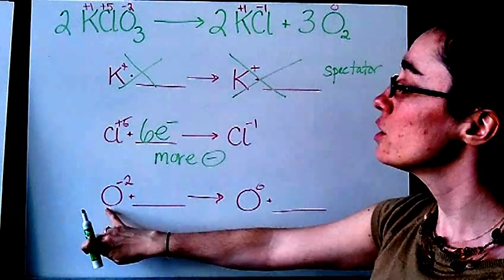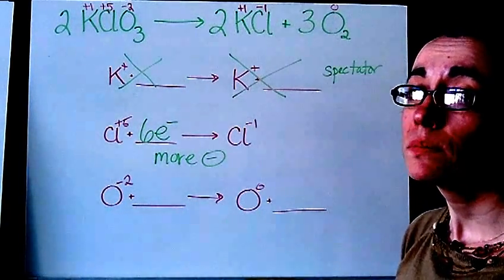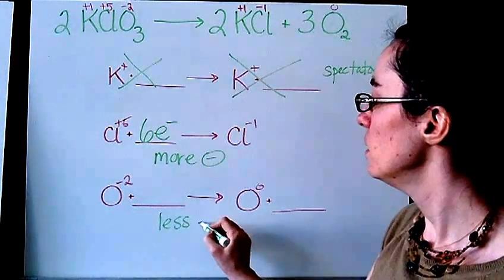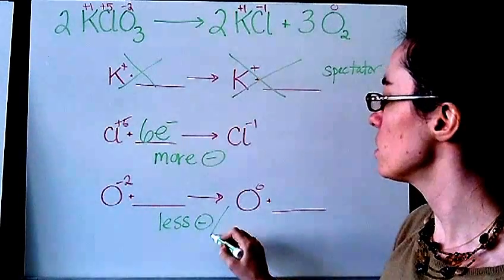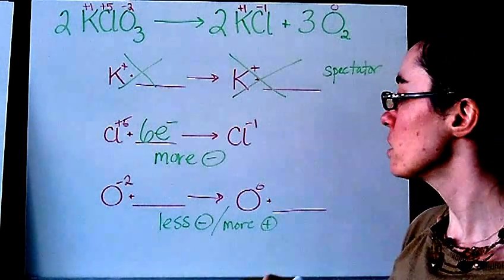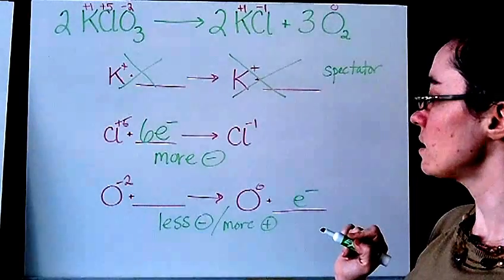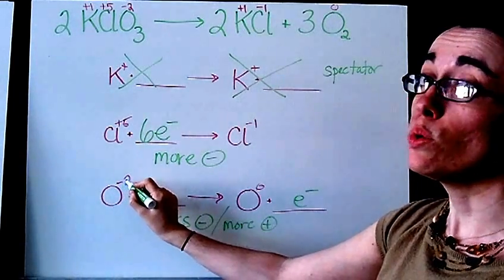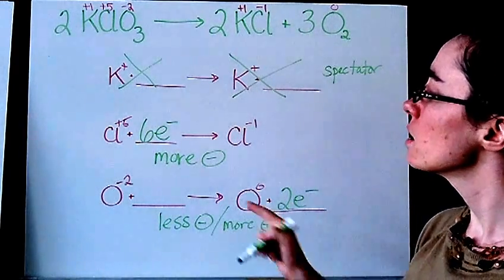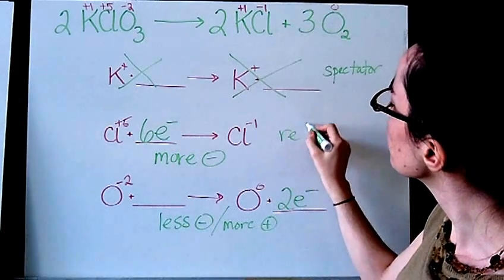I look at my oxygen. The oxygen goes from negative two through the reaction. It ends up being zero. So this one actually loses electrons. And so this is getting less negative. Or another way you could say that is more positive. And so that means, as we said, that electrons are being lost or are set free. And so the electrons actually belong on this side. And since we went from two negative charges to zero negative charges, it's two electrons. Since this one is gained and the electrons are on the left, this is our reduction half reaction.